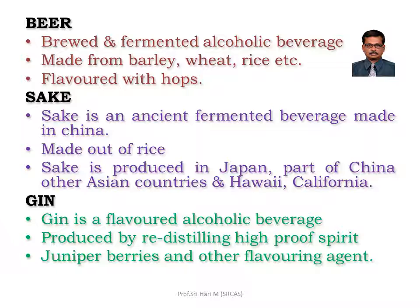Beer is a brewed and fermented alcoholic beverage. It is made from barley, wheat, rice, etc., and remember it is flavored with hops. Sake is an ancient fermented beverage made in China, with rice as the main ingredient. Sake is produced in Japan, some parts of China, other Asian countries, and Hawaii and California. Sake is essentially a Japanese drink.